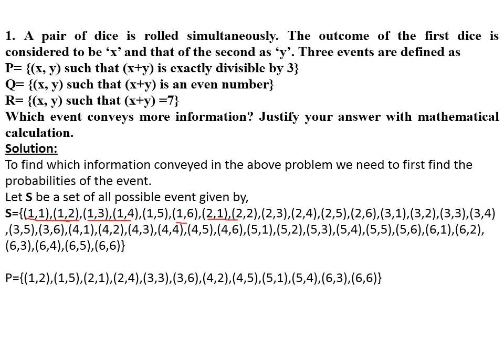Next we define event P, where x+y is exactly divisible by 3. Picking from the 36 outcomes, we get: (1,2), (1,5), (2,1), (2,4), (3,3), (3,6), (4,2), (4,5), (5,1), (5,4), (6,3), and (6,6). The total number of favorable outcomes is 12. So the probability of event P is 12/36.